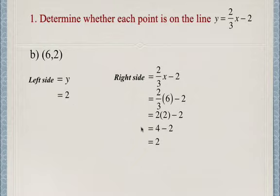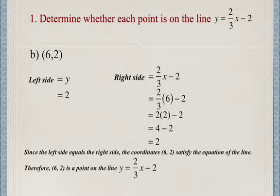Since our left side is equal to our right side (and make sure you show all your work on assignments and tests), the coordinates (6,2) satisfy the equation. That means that (6,2) is a point on the line y = 2/3x minus 2.